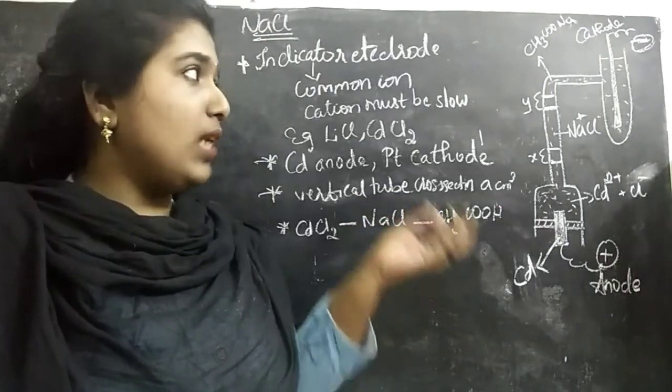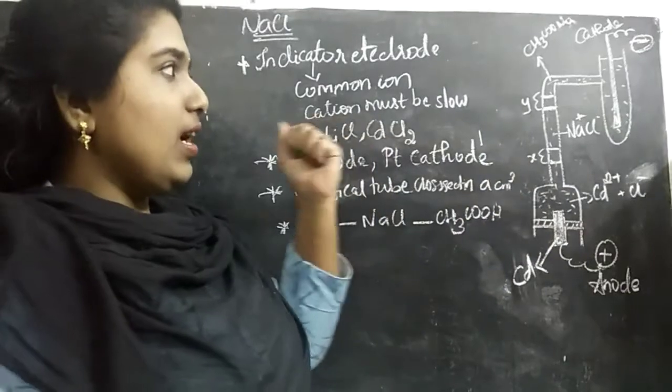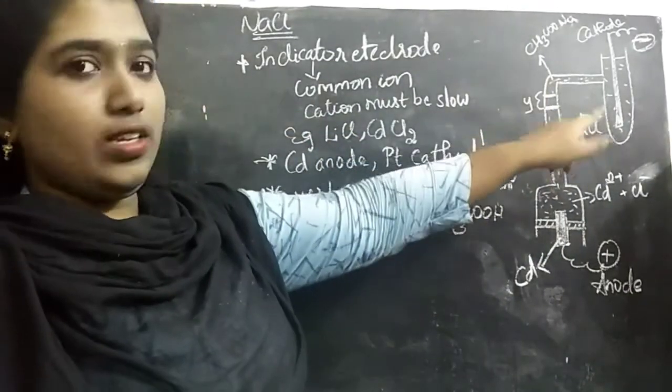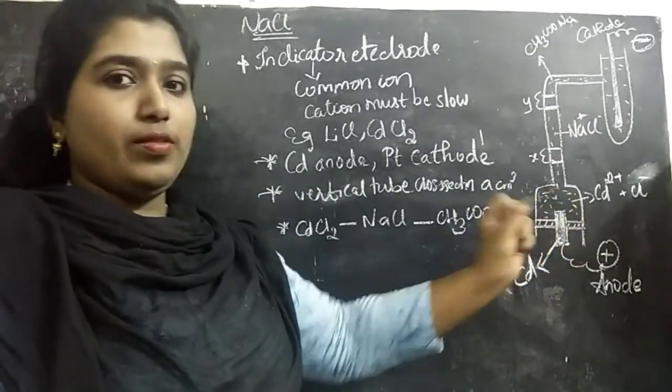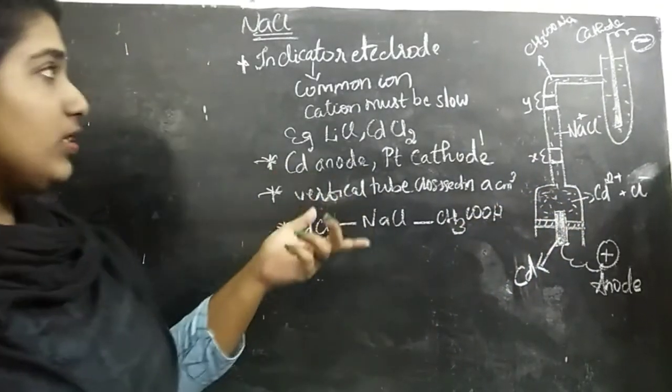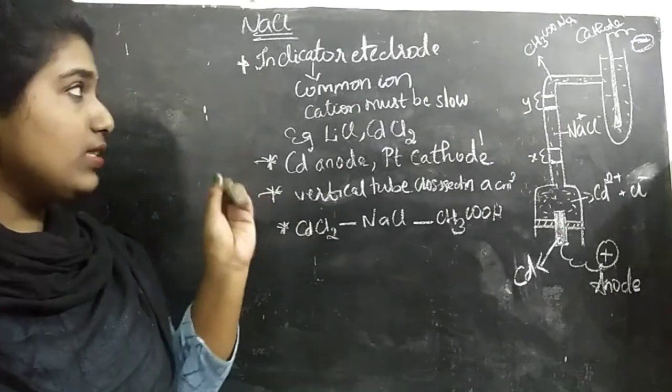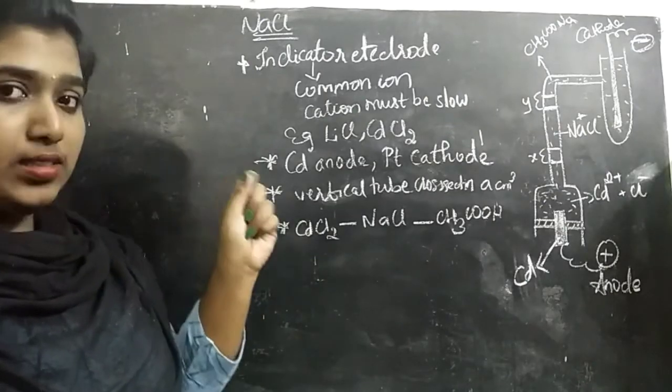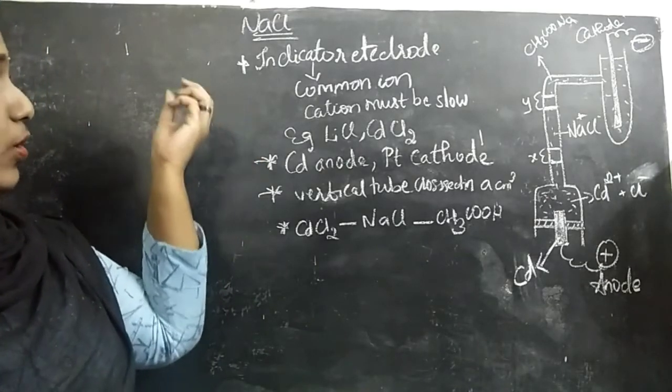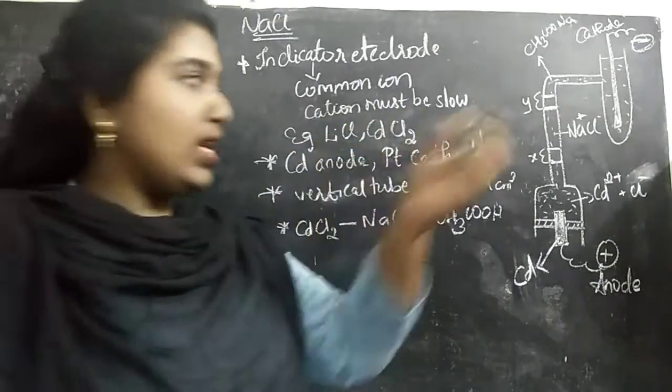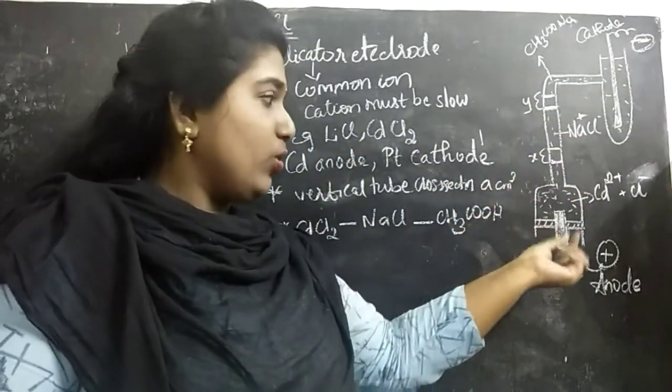Now let us look into the apparatus of the moving boundary method. Here you can see a vertical tube, another tube, and at the bottom there is another compartment for electrolyte. We use an indicator electrode. Now we are going to calculate the transport number of Na+ in NaCl. We load the NaCl electrolyte in this vertical tube at this particular section.